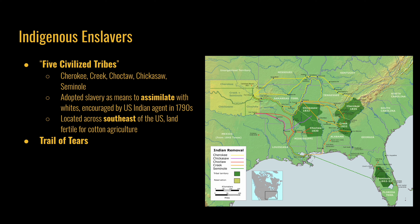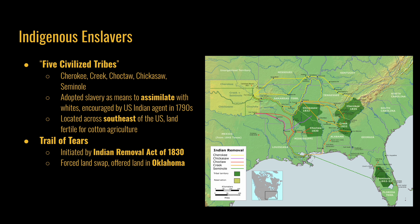In 1830, Congress passed the Indian Removal Act, and it was a forced land swap for these tribes. The federal government offered them land in Oklahoma, often a larger amount of land than they held in the Southeast, to try and entice them to move and open up that land for white settlements. After several years, the federal government forced the American Indian tribes to take the land swap, given that some members of the tribe signed a treaty with the federal government accepting it without the full consent of the rest of the tribe.